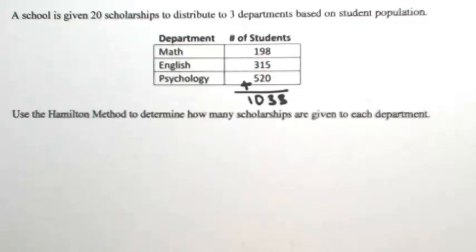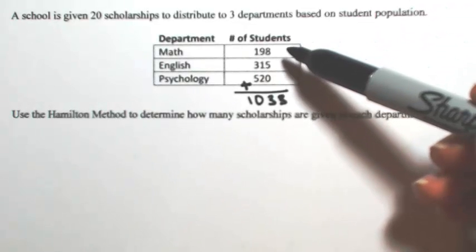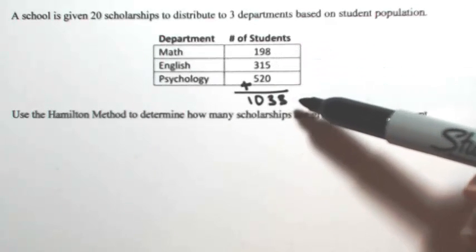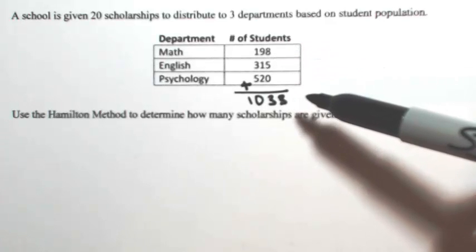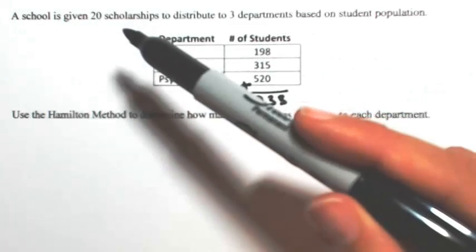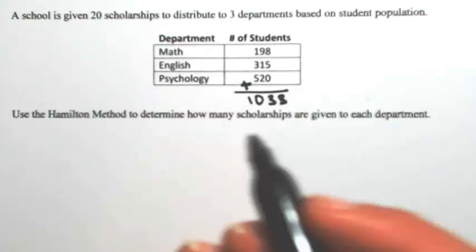To figure out each quota for each department, we're going to take the number of students in that department and divide it by the total population. That will give us a percentage. Then we're going to take that percentage and multiply it by the 20 scholarships to figure out how many scholarships each department should have.